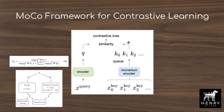Outdated keys are no longer used for similarity comparison in the contrastive loss. Drawing from CPC (contrastive predictive coding), to do the similarity comparison between queries and keys, you don't just multiply the query by the key — you also multiply by a learnable weight matrix to facilitate the comparison.